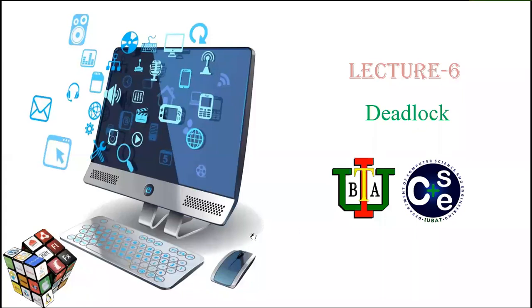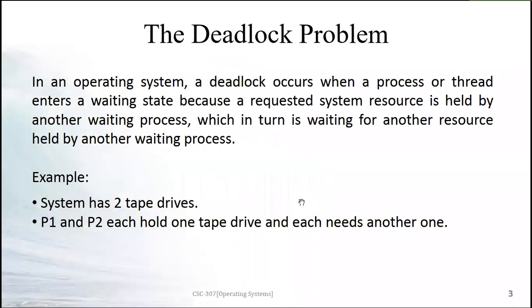Before the midterm, we studied Chapter 6, Lecture 6 on deadlock. Deadlock occurs when a process or thread enters a waiting state because a requested system resource is held by another waiting process. A special case of deadlock is when a process is waiting for a resource held by another process, which is also waiting for a resource held by yet another process, creating a circular wait.